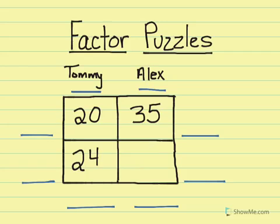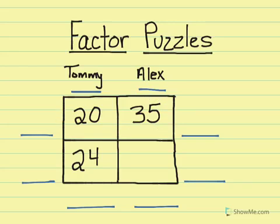To solve this, I'm just going to use my factor puzzle strategy. First, I'm going to look at 20 and 35. I'm going to think to myself what number goes into both 20 and 35. Let's try 5. If I put a 5 on one side, I have to carry it over to the other.